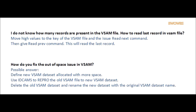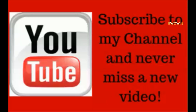Question: How do you fix the out-of-space issue in VSAM? Possible answer: Define a new VSAM data set allocated with more space. Use IDCAMS to REPRO the old VSAM file to the new VSAM data set. Delete the old VSAM data set and rename the new data set with the original VSAM data set name.